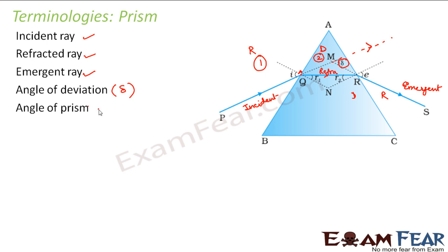There is something called angle of prism. Angle of prism is this angle. This angle of the prism is known as the angle of prism. So these are some of the terminologies which will be helpful as we go ahead and study more about prism.